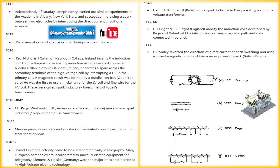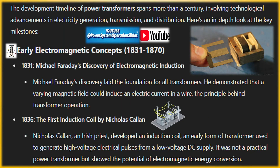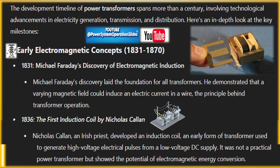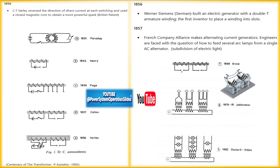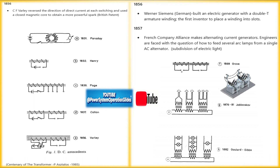Around the same time, in the late 1880s, William Stanley, working for Westinghouse Electric Corporation, developed and patented a more advanced design for the transformer. Stanley's design improved on earlier models and became the basis for modern transformers. The first practical application of Stanley's transformer was in the Great Barrington Experiment of 1886, where he successfully demonstrated the transmission of electrical power over a distance using transformers.